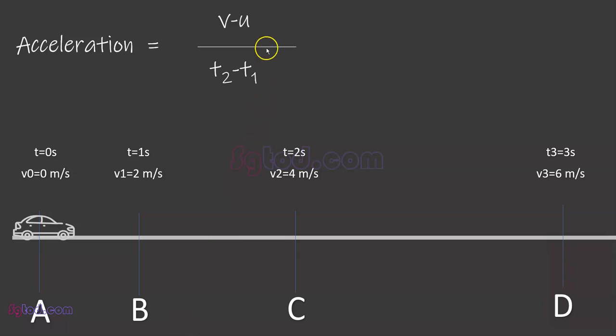Using the formula for acceleration, we can compute its acceleration at each time interval. At time t equals 1 second, the final velocity is 2 meters per second.